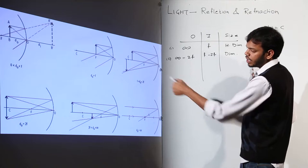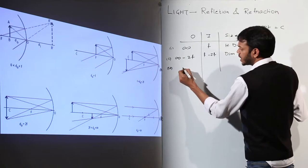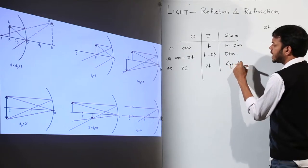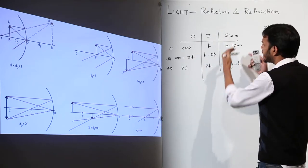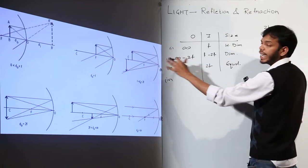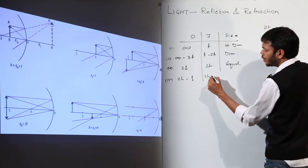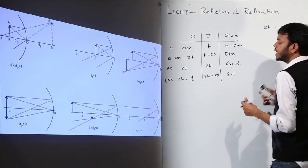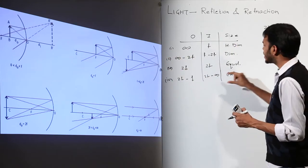Continuing the pattern: when the object is placed between 2f and f, the image shifts beyond 2f — between 2f and infinity — and the size becomes enlarged. So object closer than 2f gives an image beyond 2f that is enlarged. This is consistent with the pattern we have been following: bringing the object closer pushes the image farther and increases its size.